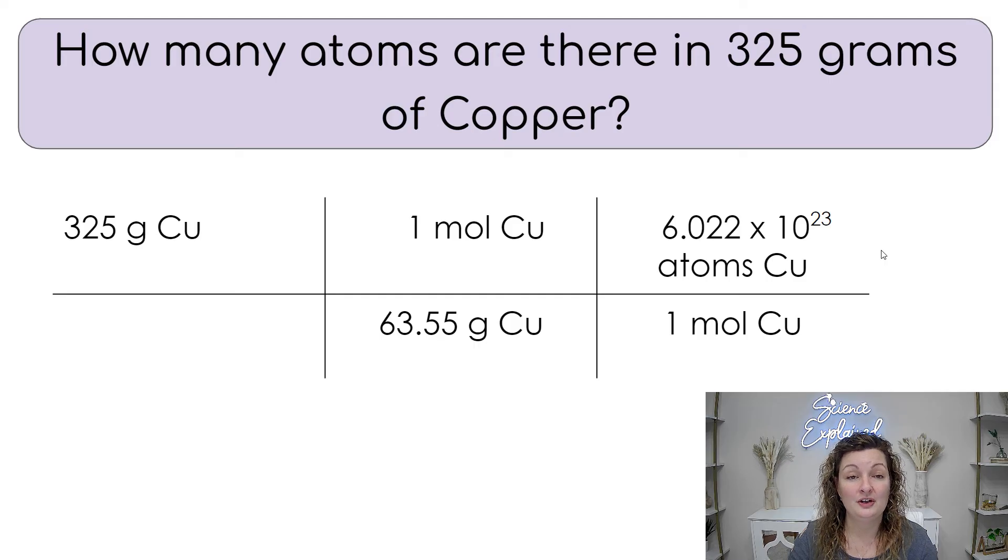Now we can go ahead and cross out our units. So grams of copper, grams of copper are canceled out. Moles of copper, moles of copper get canceled out. And we are left with atoms of copper as our final unit. We have to do the math part now in our calculators. We're going to multiply the top, get a number, multiply the bottom, get a number, and then divide those numbers.